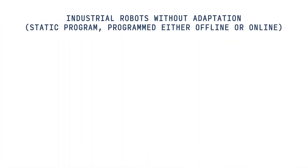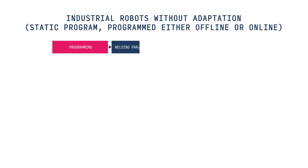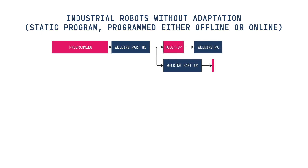Let's see what will happen when we use robotic programs without any adaptation — meaning machine vision or touch sensing. In this case, we need to consider not only the initial programming of the part and cycle time of the welding process, but also two additional procedures: touch-ups of the program after loading a new part, and rework if the touch-up has been skipped. The frequency and time required for touch-ups and rework depend on your particular case and should be measured to analyze the final cost.